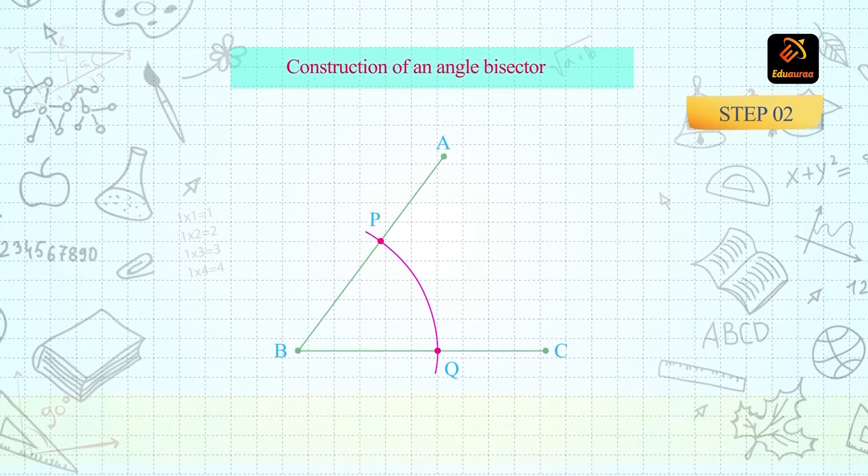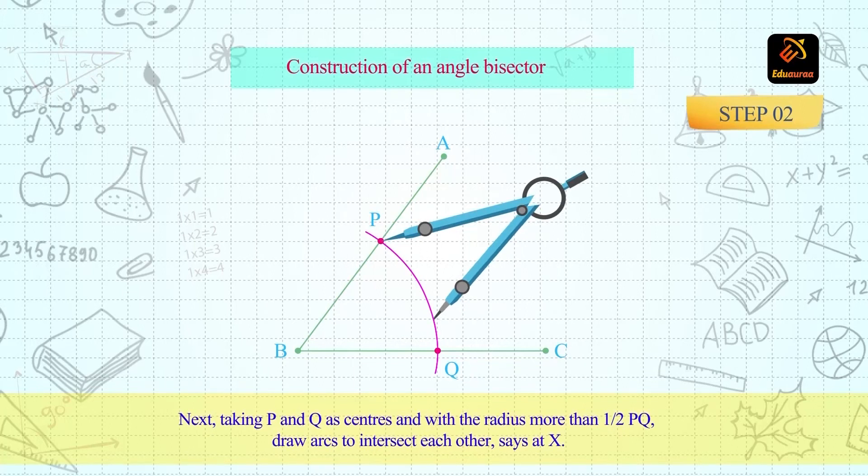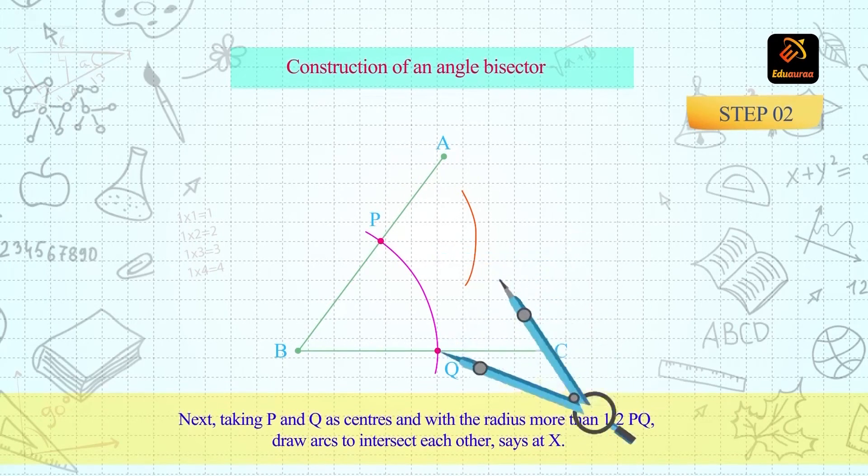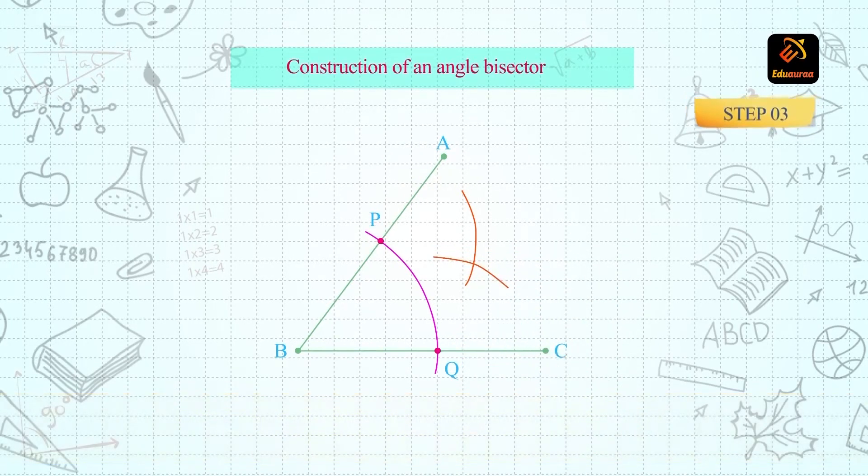Next, taking P first and then Q as centers and with radius more than half PQ, draw arcs to intersect each other at the point X.